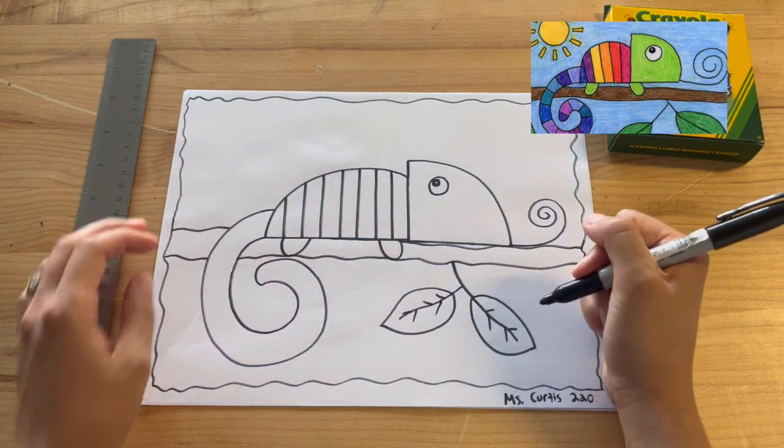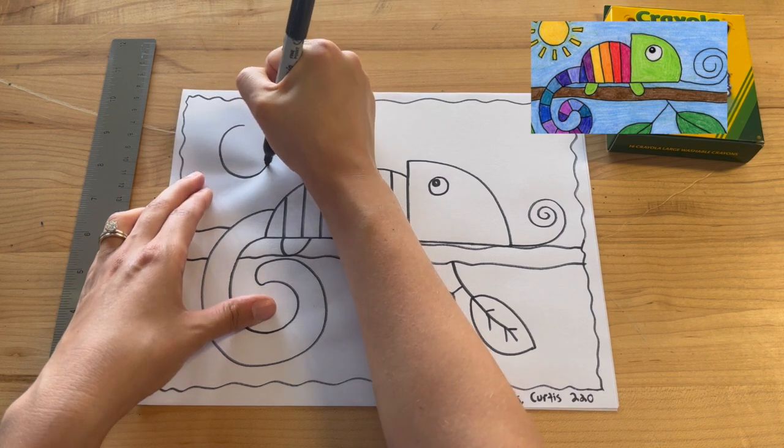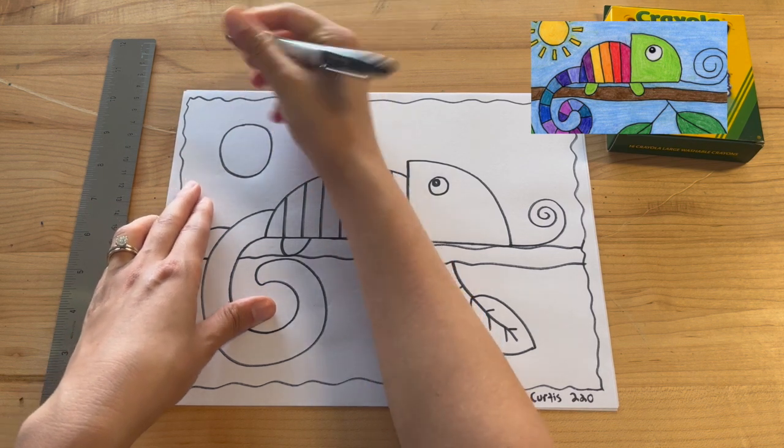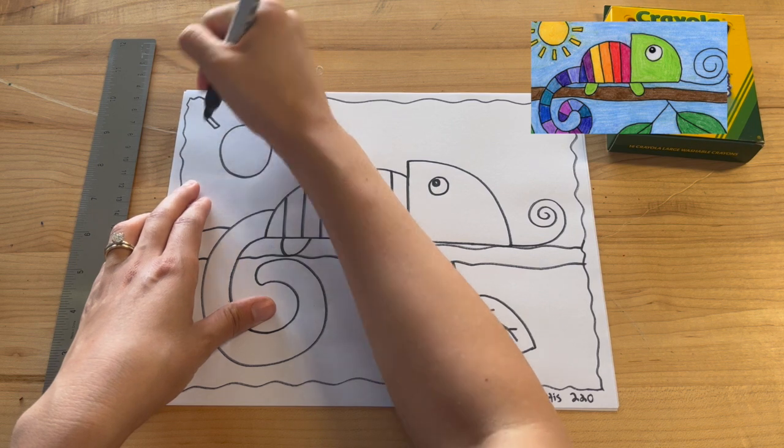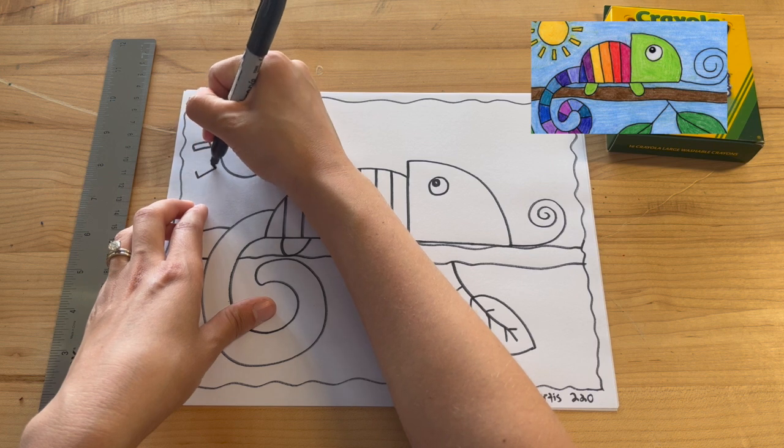And we can add a nice sun in the top corner, so just a circle shape. And we can make some lines. These are going to be little rectangles I'm going to add coming off.